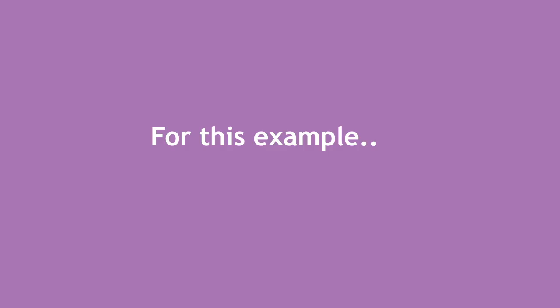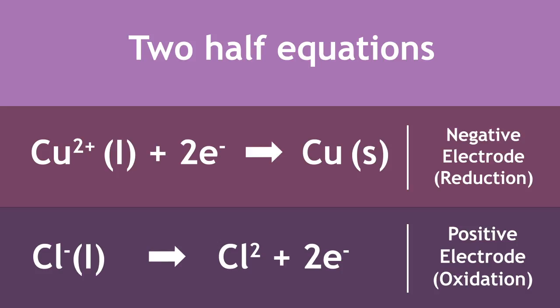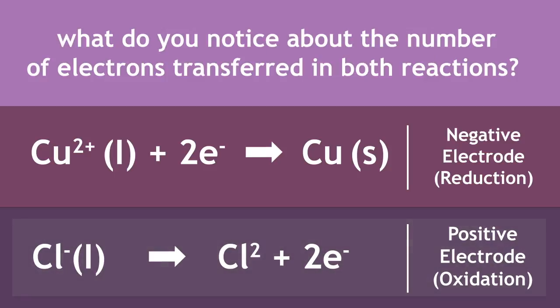For this example, the electrolysis of molten copper chloride is shown as two half equations, one for the oxidation at the negative electrode and one for the reduction at the positive electrode. What do you notice about the number of electrons transferred in both reactions? Pause the video and resume when ready.